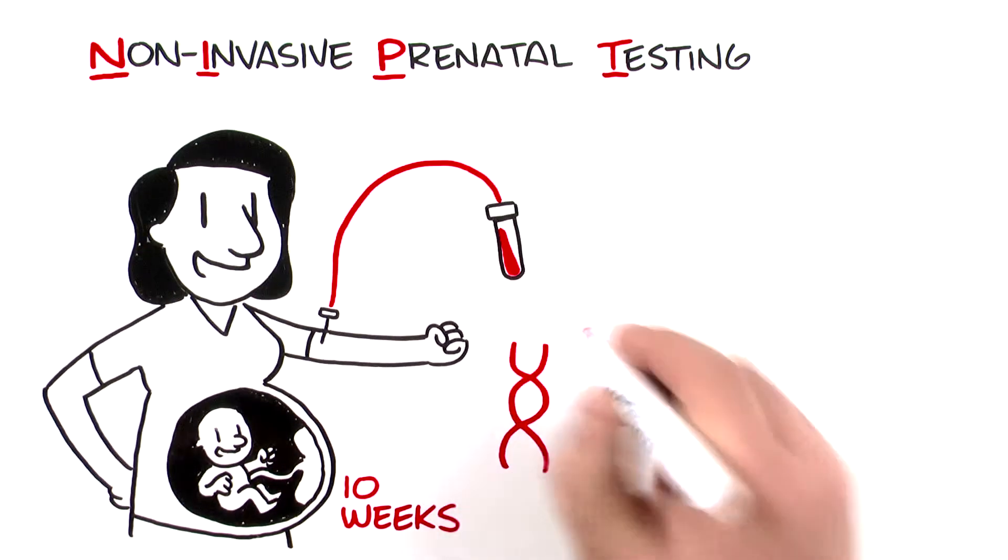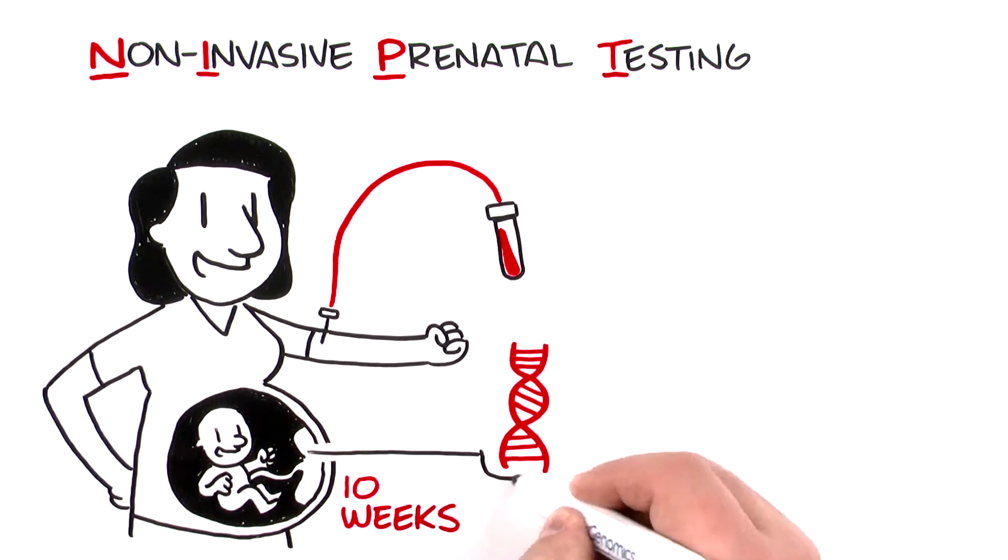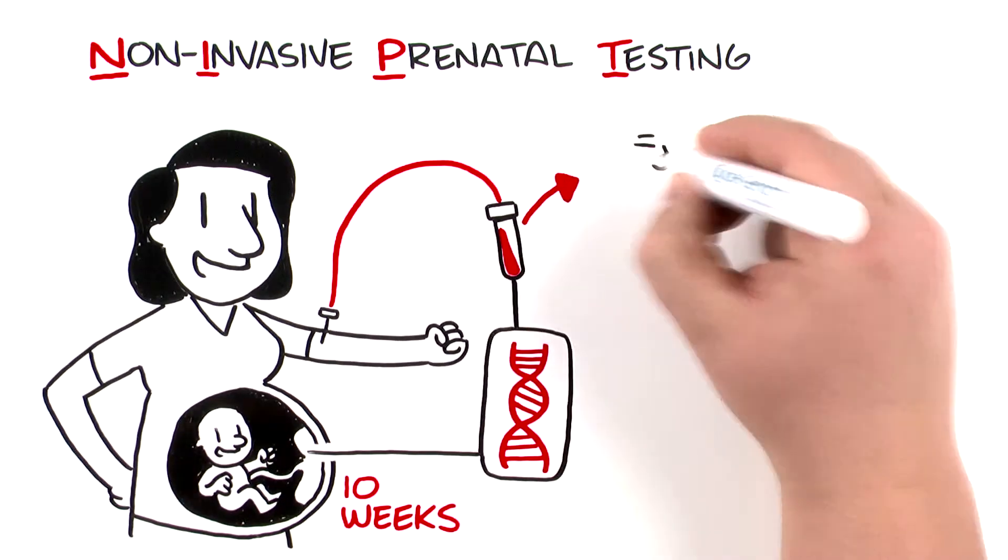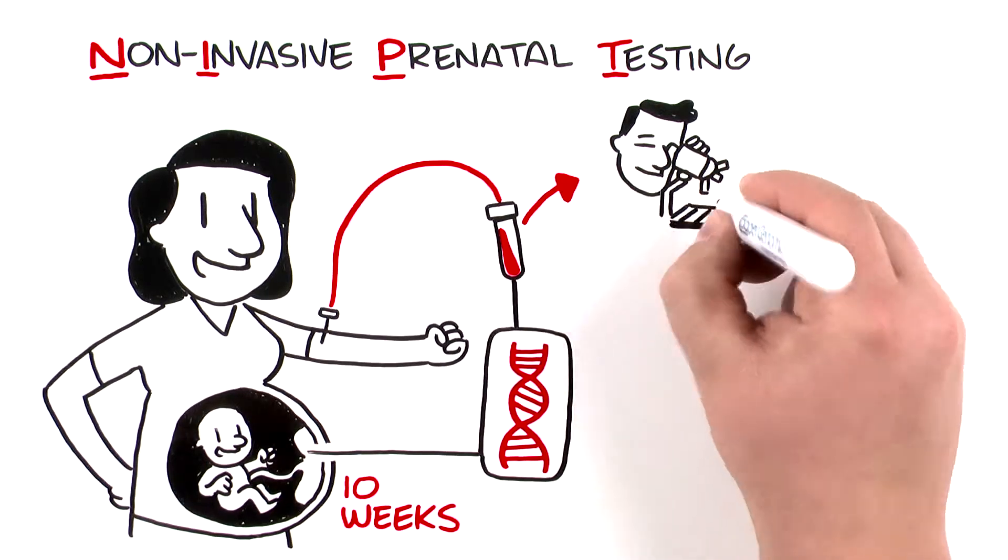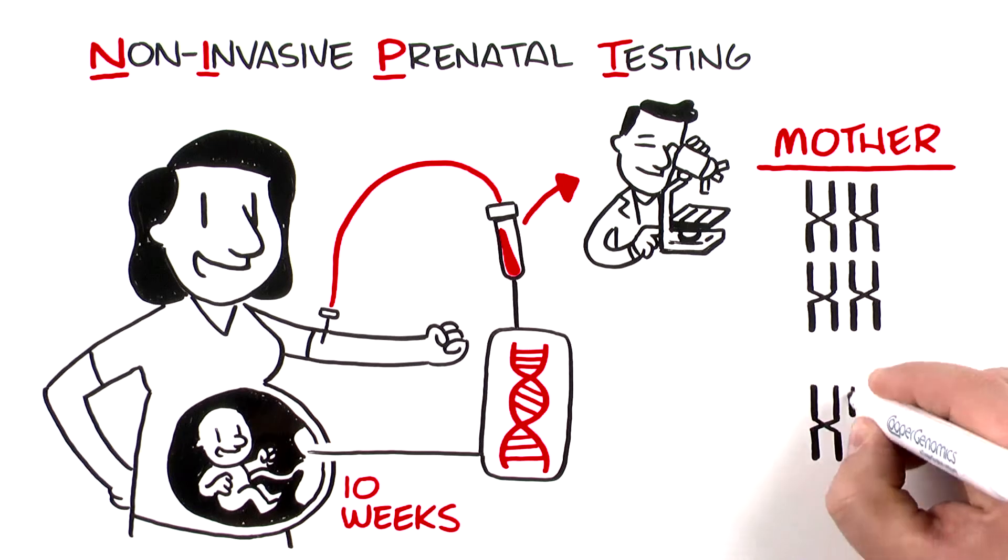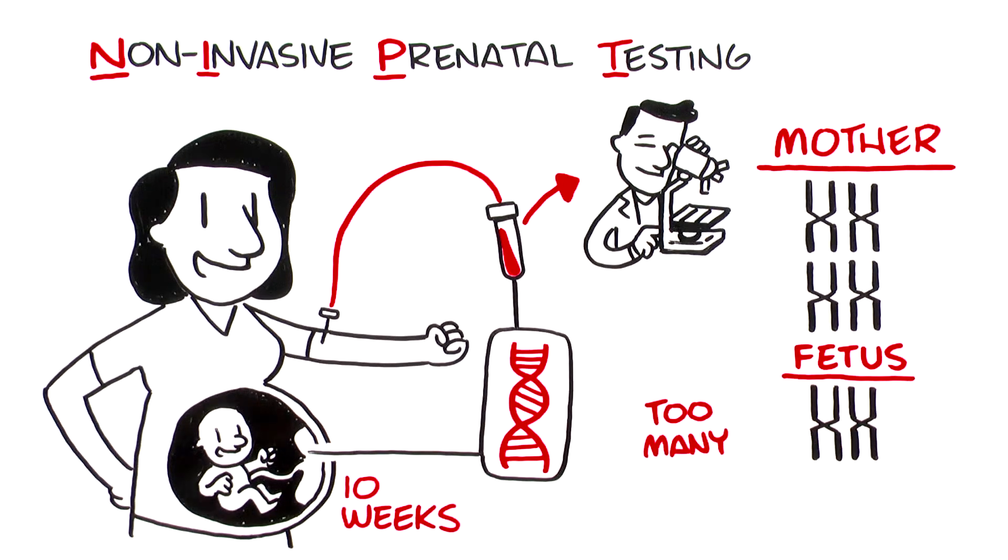DNA from your fetus, which originates in the placental cells, can also be found in the mother's blood. Using sophisticated technology, our lab experts count the number of copies of chromosomes present in the mother and the fetus and calculate whether the fetus has the right number of chromosomes.